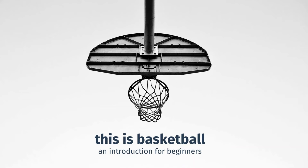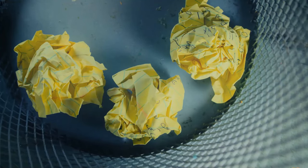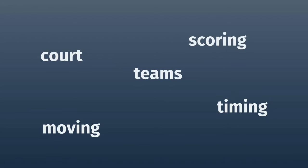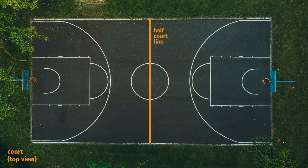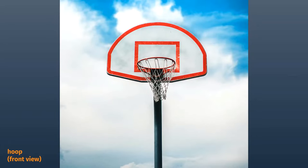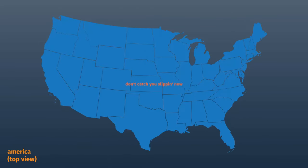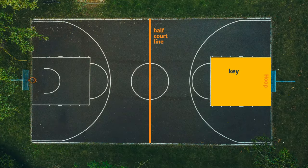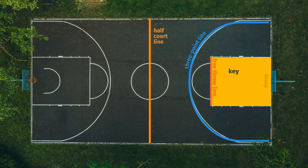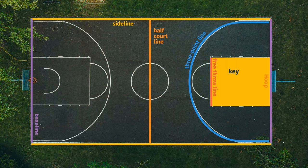Basketball: the organized version of crumpling up a piece of paper and whipping it into a garbage can. In fact, it's gotten so organized and there are so many roles now that we're going to split it up into five parts — and even that won't cover everything, but it'll be a decent start. This is a basketball court. This is a half-court line. This is a hoop. This is also a hoop. This is a backboard. This is a rim. This is America. This area is the key. This is a foul line. This is a three-point line. This is a sideline and these are baselines. In basketball, if you step on the sideline or the baseline while holding the ball, you are considered out of bounds.